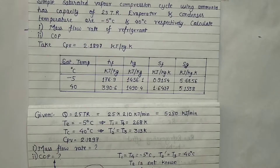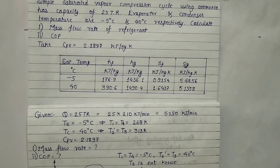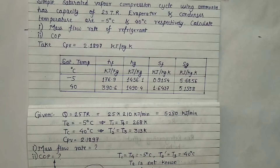Values of HF, HG, SF, and SG are given in the table. According to the given conditions we will note down. As in the question it is given as simple saturated vapor compression cycle, that means we need to represent the 4 processes of evaporation, compression, condensation, and expansion on the pH and TS diagram.